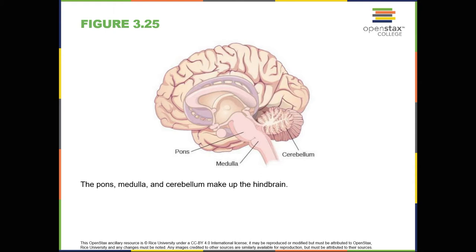The cerebellum — Latin for little brain — receives messages from muscles, tendons, joints, and structures in our ear to control balance, coordination, movement, and motor skills. The cerebellum is also thought to be an important area for processing some types of memories. In particular, procedural memory, or memory involved in learning and remembering how to perform tasks, is thought to be associated with the cerebellum. Recall that H.M. was unable to form new explicit memories, but he could learn new tasks. This is likely due to the fact that H.M.'s cerebellum remained intact.